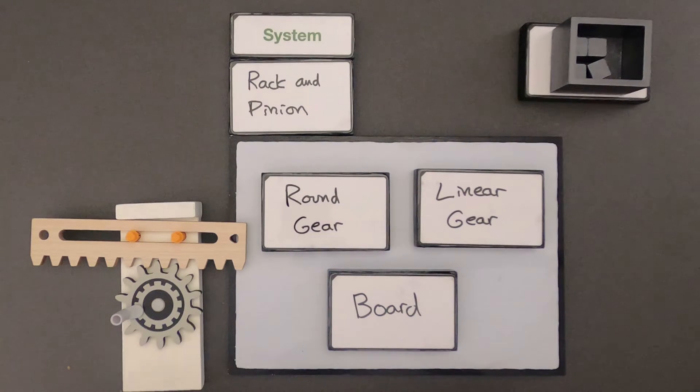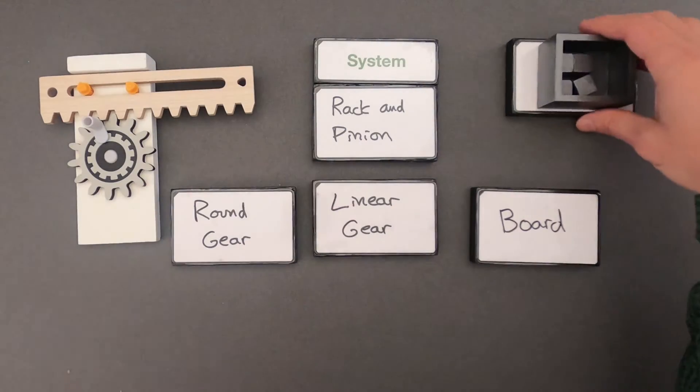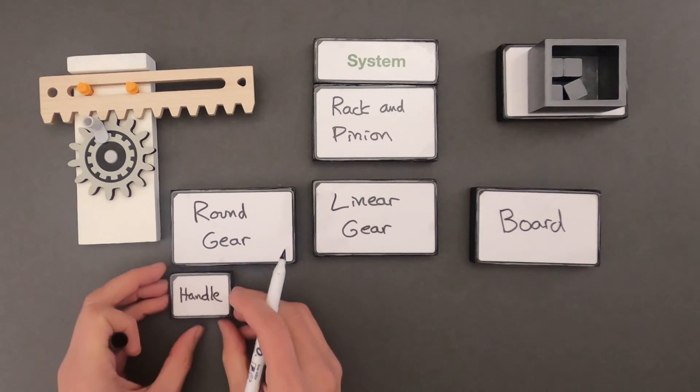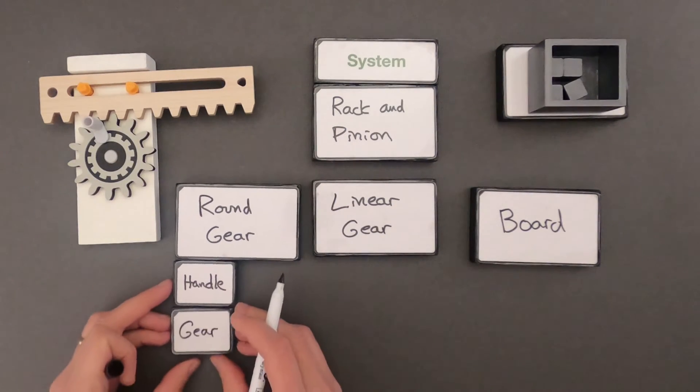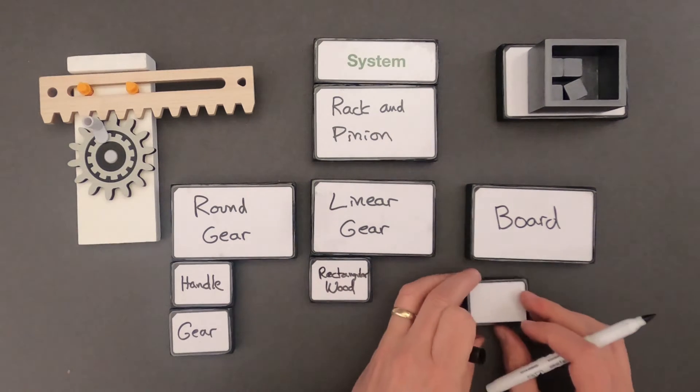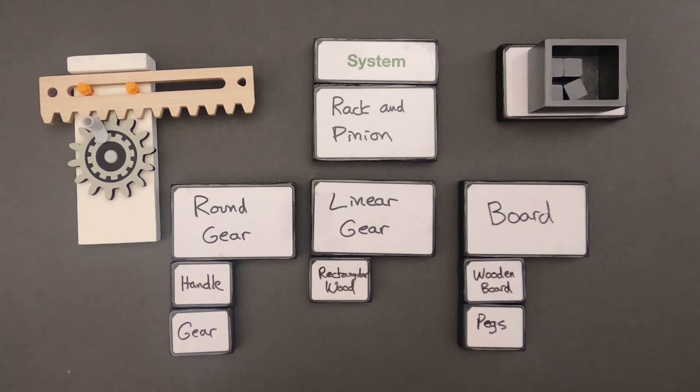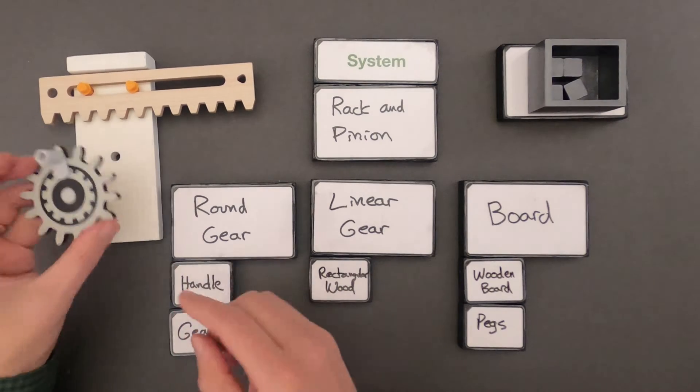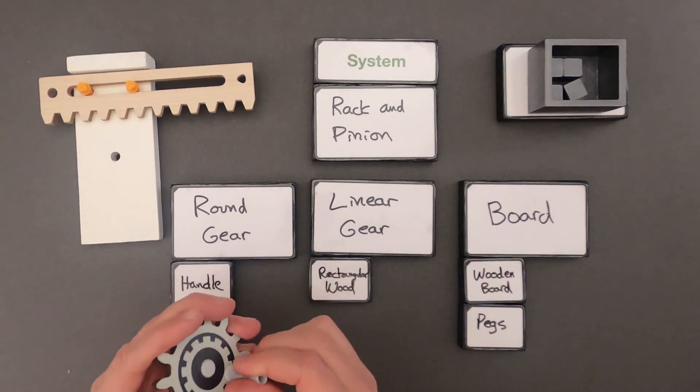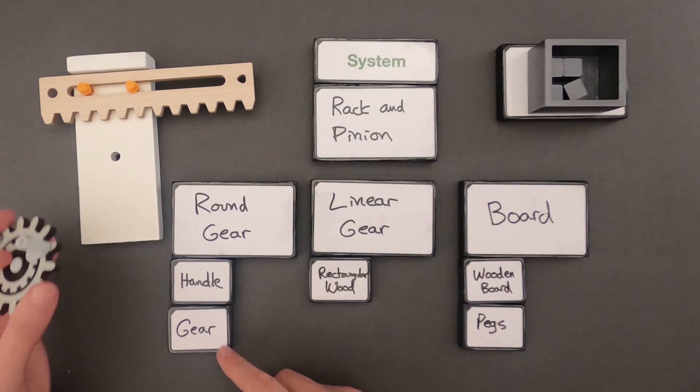Next thing I would do is see are there systems within those systems. So let me break down these systems into their parts. Okay I've broken now the round gear into its two parts. There's a handle. I could pull this handle out and so that would be what I turn the gear with. And then there's the gear itself.